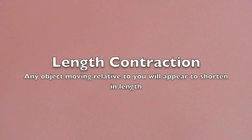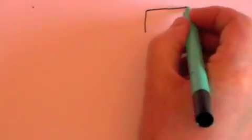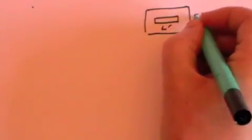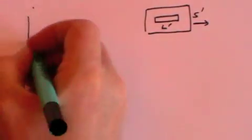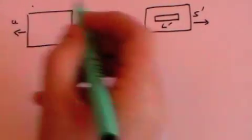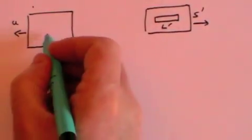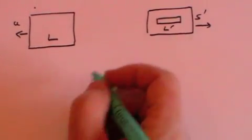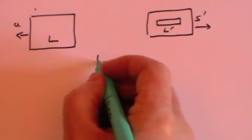We now move on to a concept called length contraction. Let's suppose that S prime has a rod of length l prime. S, traveling at a relative speed of u, measures that rod and says that it is of length l. Both have to measure that length at a time distance of zero.